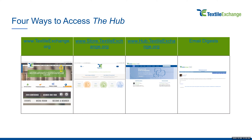My favorite way is through the email digest. These are the emails that come to your inbox whenever there is activity on the Hub. At most, you would get one of these once a day, and you can also change the frequency to once a week if you're getting these emails too often. There's an option at the bottom of your digest emails to change the frequency. You can also get right into a discussion through those digest emails.